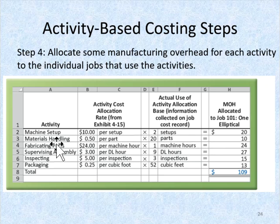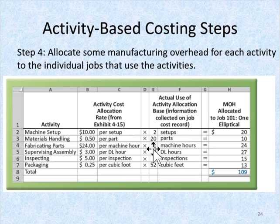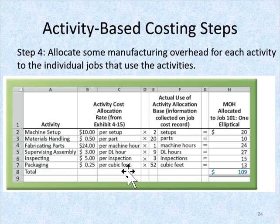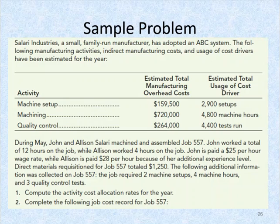Materials handling is 50 cents per part and there are 20 parts. Fabricating takes one machine hour, supervising requires nine direct labor hours, there are three inspections, and then packaging. So $109 in total would be allocated to one elliptical.